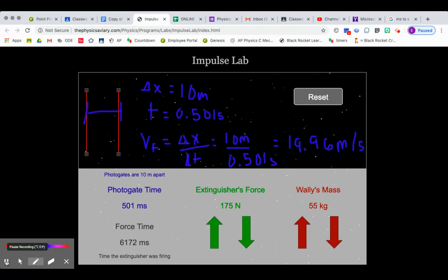Okay, so you can now calculate change in velocity. We know that before the fire extinguisher acts, his initial velocity would be 0.